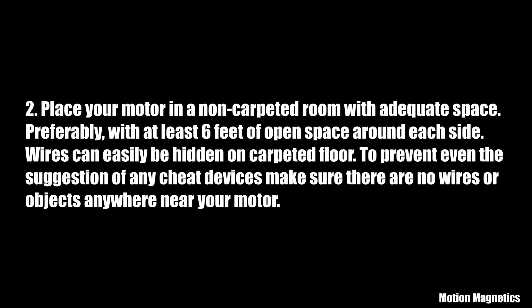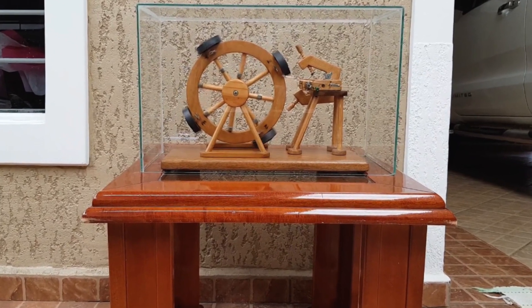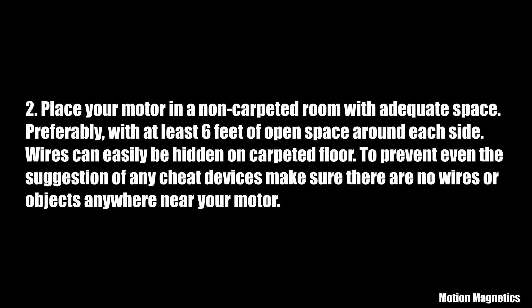Guideline 2: Place your motor in a non-carpeted room with adequate space, preferably with at least six feet of open space around each side. Wires can easily be hidden on carpeted floor. To prevent even the suggestion of any cheat devices, make sure there are no wires or objects anywhere near your motor.